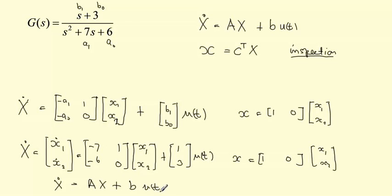multiplied by a column vector multiplied by some vector b, u of t and our x equals to some transpose column vector multiplied by x